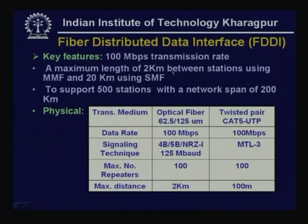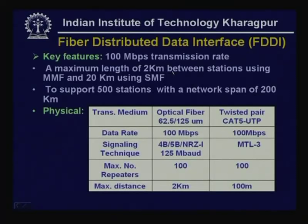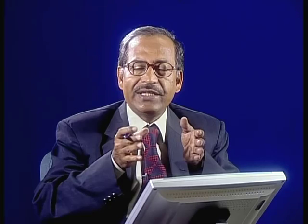Now let us look at the key features of FDDI. The data rate has been increased from 4 or 16 megabits per second (as used in 802.5 token ring) to 100 megabits per second — almost an order of magnitude enhancement. It can support a maximum length of 2 kilometers between stations using multimode fiber and 20 kilometers using single mode fiber. The network span in token ring was very small, but here it can be much larger.